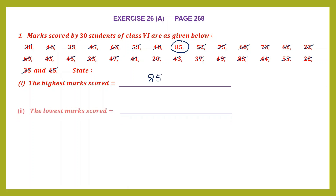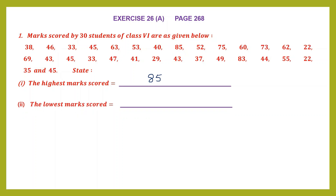Let's go to the next question: the lowest marks scored. When we went through the numbers, we saw some numbers in the 20s. So let's look for those. In the first row we have 22. In the second row we have 29. And at the end of the row there is a 22. Which among these is the smallest? The 22s are the smallest. So the lowest marks scored is 22.